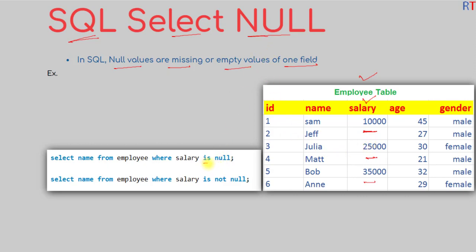To select those NULL values, we use the IS NULL operator. For example, we can write: SELECT column_name FROM employee WHERE salary IS NULL. This query will return all the names of employees whose salary field is NULL.